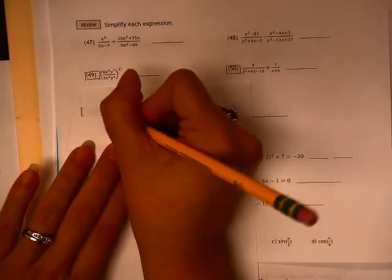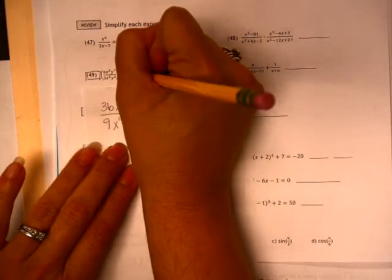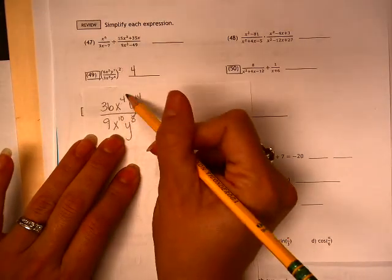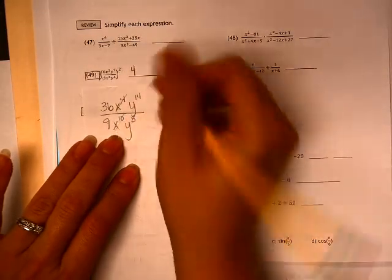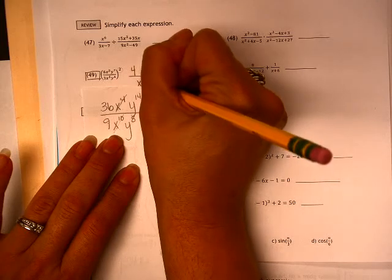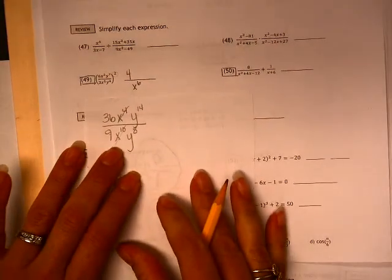And now I just need to reduce here. So 36 over 9 is 4. Here, there are 4 on here, but there's 10 down here. That means that there are 6 more on the bottom than there are on the top.